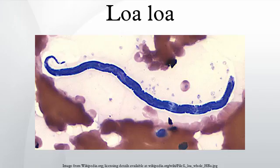Maturing larvae and adults of the eye worm occupy the subcutaneous layer — the fat layer — of humans, causing disease. The young larvae develop in horseflies of the genus Chrysops, including the species C. dimidiata and C. silacea, which infect humans by biting them.